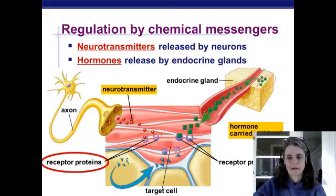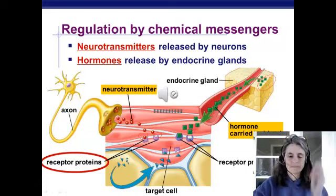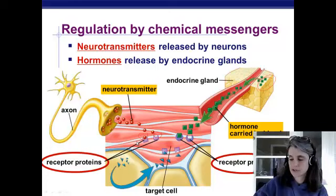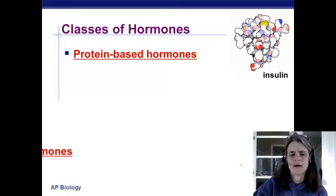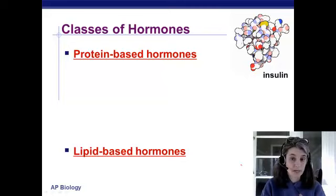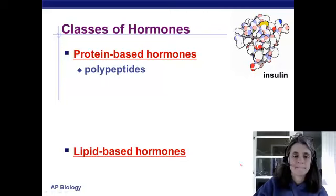Importantly, both systems require receptors — make sure you note that commonality. Now, talking about hormones: there are many, but they belong to two main classes — those made mostly from protein and those made mostly from lipid.